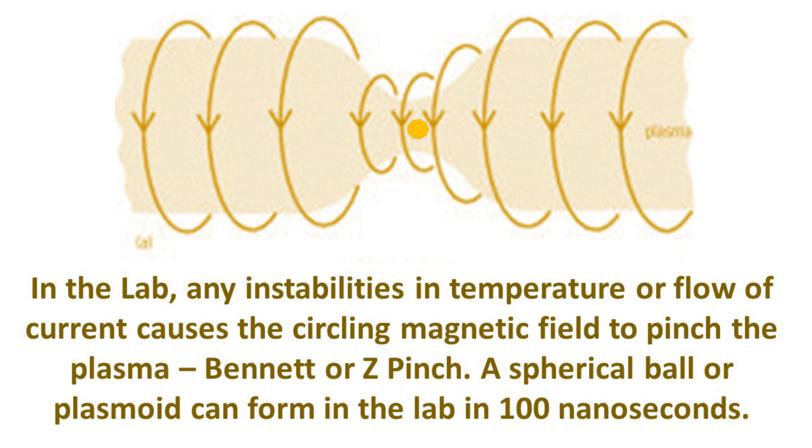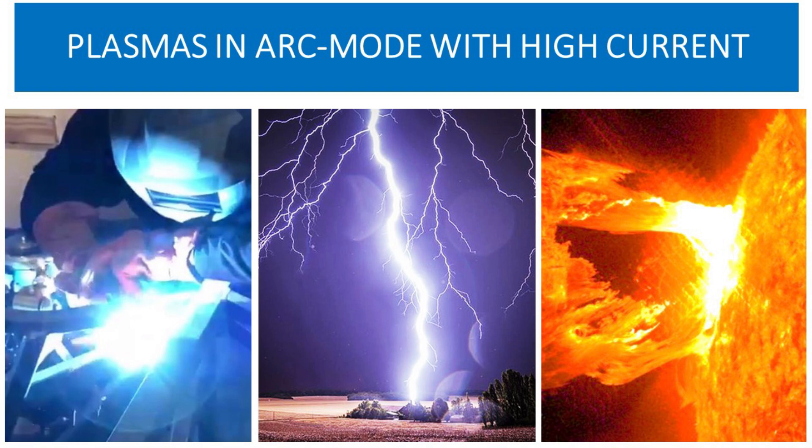The formation of stars on plasma filaments is very different. It can be done in the lab. There, in the lab, any instability in temperature or flow of current in a plasma filament causes the circling magnetic field to pinch the plasma. This is called a Bennett pinch or Z-pinch, as illustrated here. When the plasma is pinched like this, it forms a ball called a plasmoid. In the lab, the ball forms at the plasma pinch in 40 to 200 billionths of a second, or roughly 100 nanoseconds. In the lab, this pinching concentrates the electric current and the ball goes into arc mode.